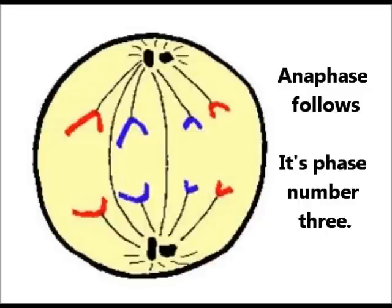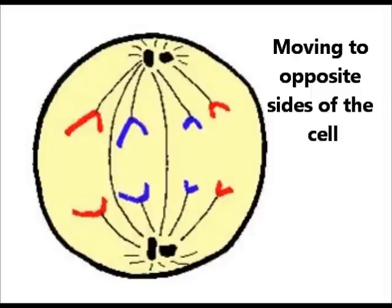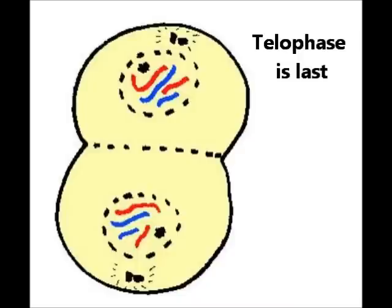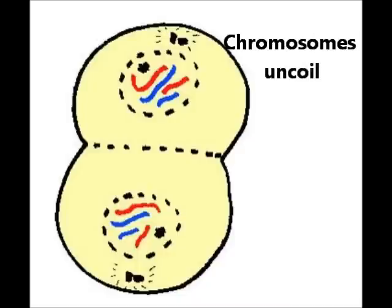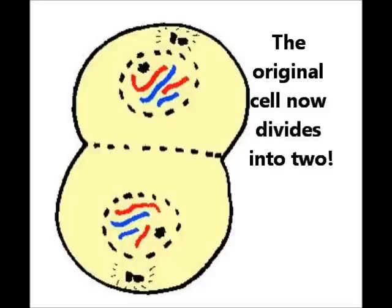Anaphase follows, it's phase number three. Chromatids separate, moving to opposite sides of the cell. Now there's four chromosomes. Telophase is last — spindles undo, chromosomes uncoil and mitosis is through. The original cell divides into two.